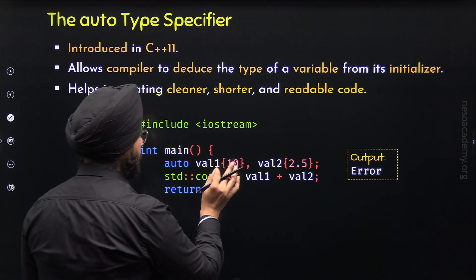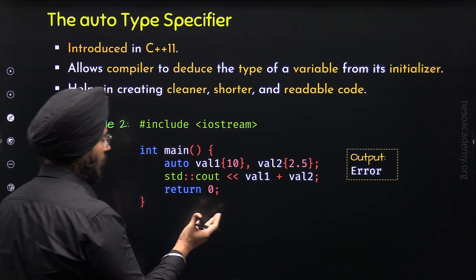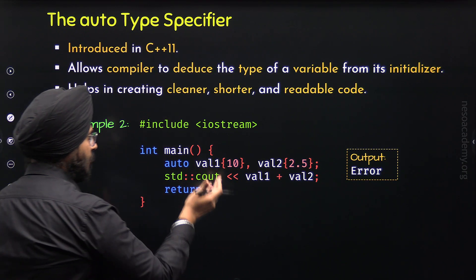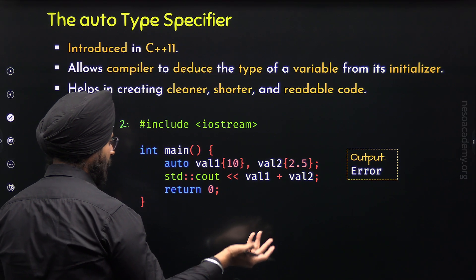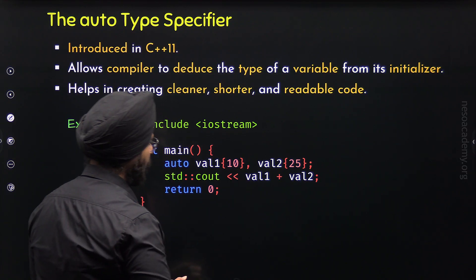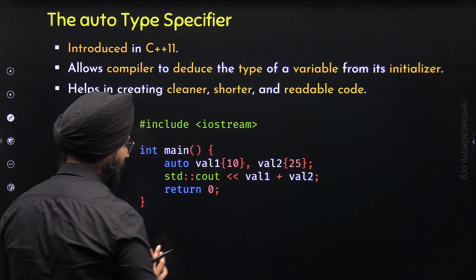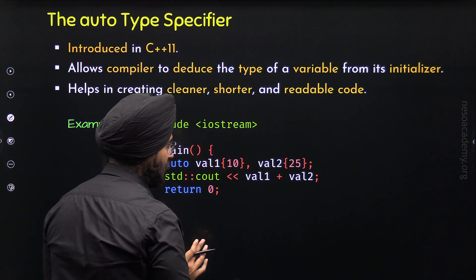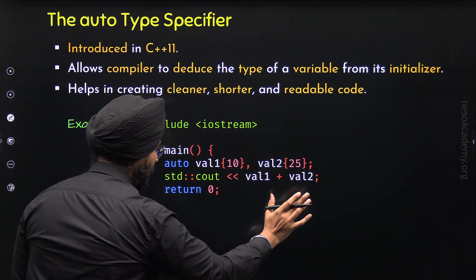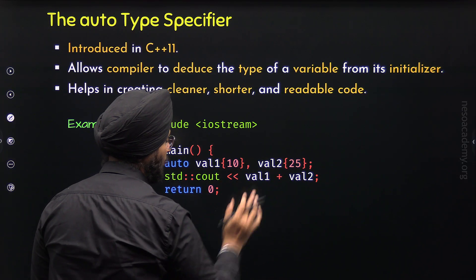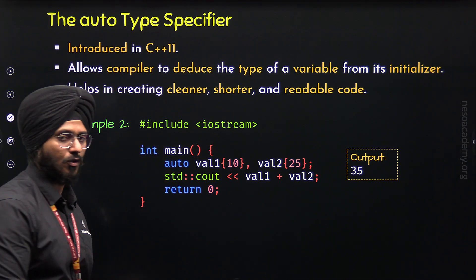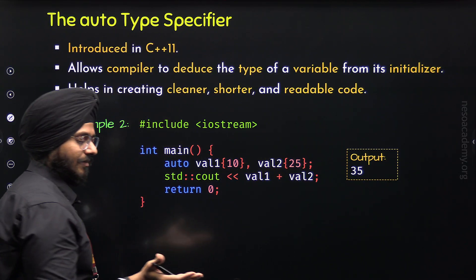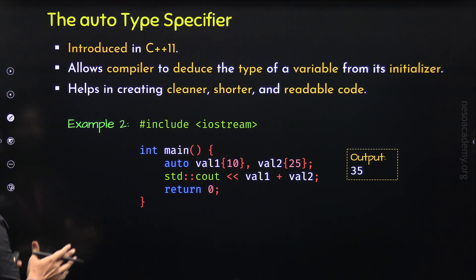To fix this, we need to replace either the integer value with a double, or the double value with an integer. For example, if we replace 2.5 with 25, then both initializers are integers. Now the deduction is possible, the compiler will deduce int, and there will be no error. If we print val1 plus val2, we get 35 as the output, because 10 plus 25 is 35. With this, we have learned the significance of Auto and completed the first topic.